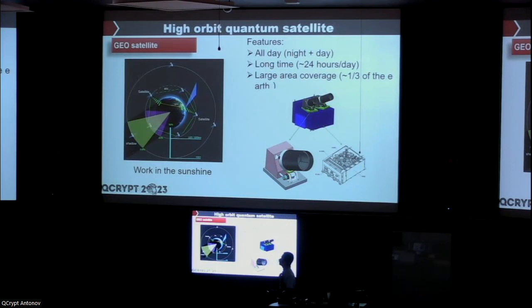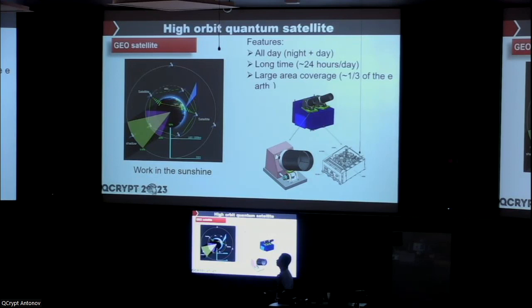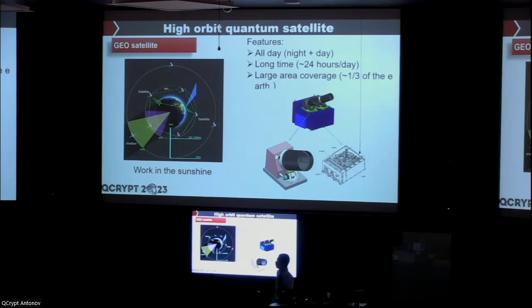Now, can we use a GEO satellite? A GEO satellite stays above your head 24 hours, giving long connection time, and with three satellites you can cover the whole globe. But the challenge is that we need much larger telescopes both in the satellite and on the ground, because the GEO distance is about 40,000 km compared to about 1,000–2,000 km for LEO — a much harder task.